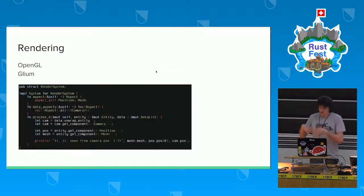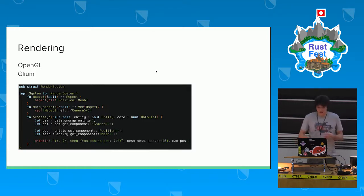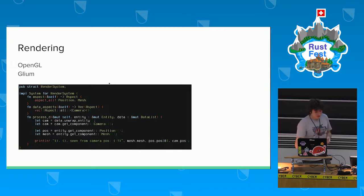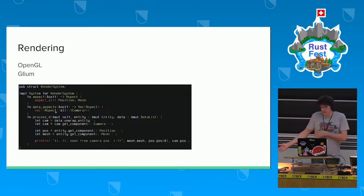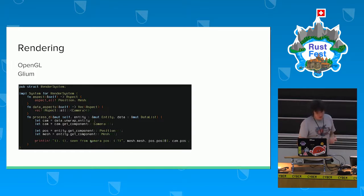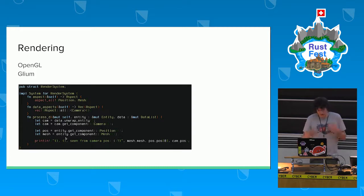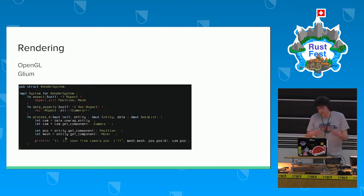Now I'll go through each major component of the game. First is rendering. I'm using Tomaka's Glium with a simple system: it's interested in any object with position and a mesh received from the server, plus some more data like cameras and lamps. I just draw it to OpenGL. Rendering is very simple right now — just one system, no shadows, no complicated graphics.